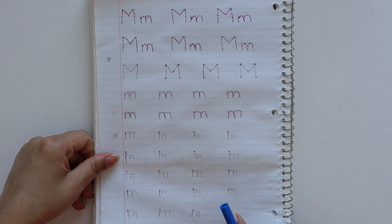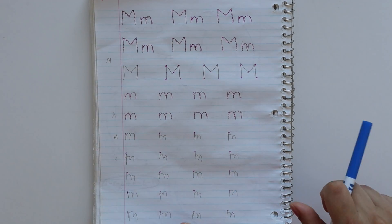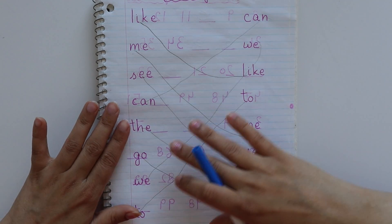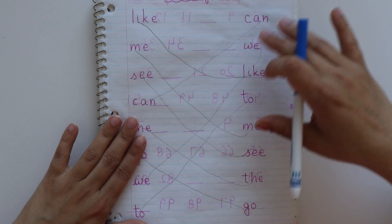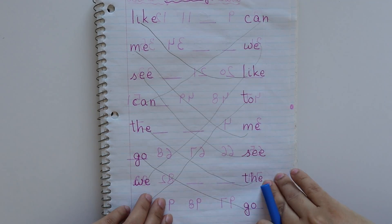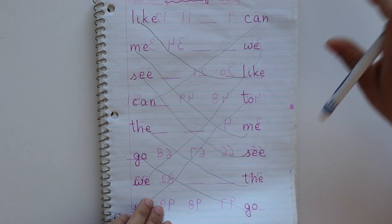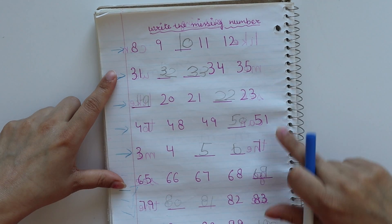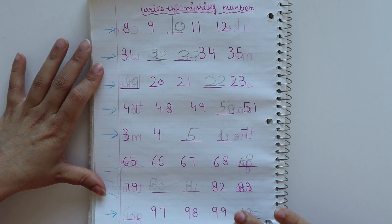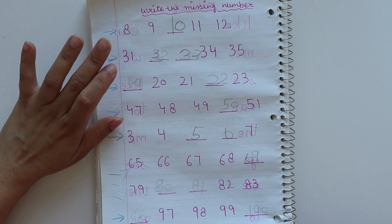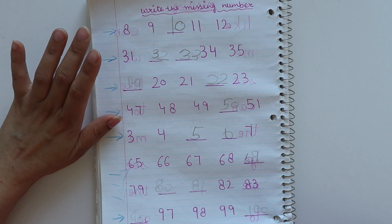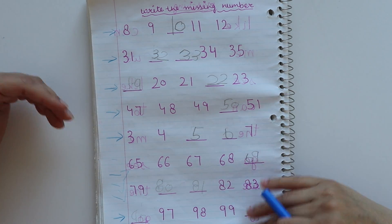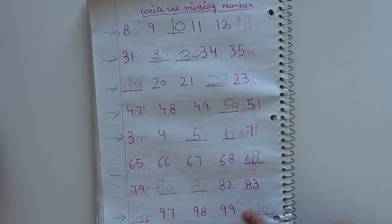Next we have letter M writing practice. The next worksheet is for sight words — here are sight words written randomly that Jiya had to match. Then I gave missing numbers randomly from 1 to 100 — not in proper sequence.